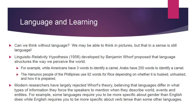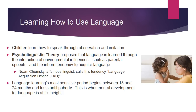Children learn how to speak through observation and imitation. When you have your baby at seven or eight months old and you are desperate for them to start calling you mama, and you keep saying it over and over and they just babble — eventually they're going to get to mama. Really what they're doing is observing and imitating the noises they hear; they just can't make those actual sounds yet.